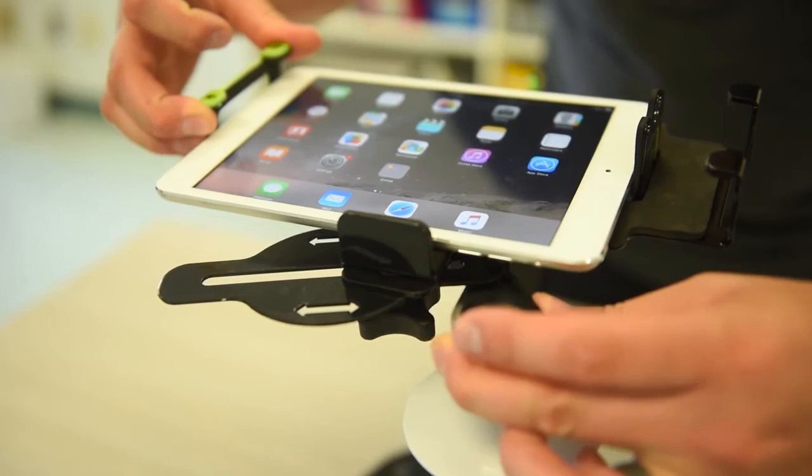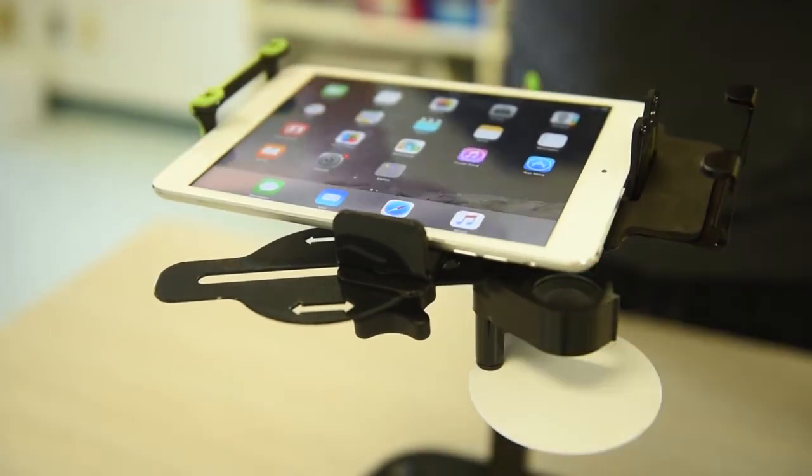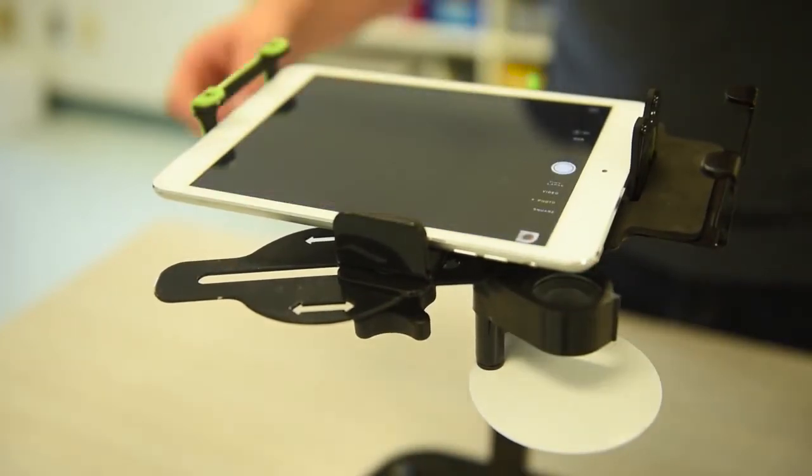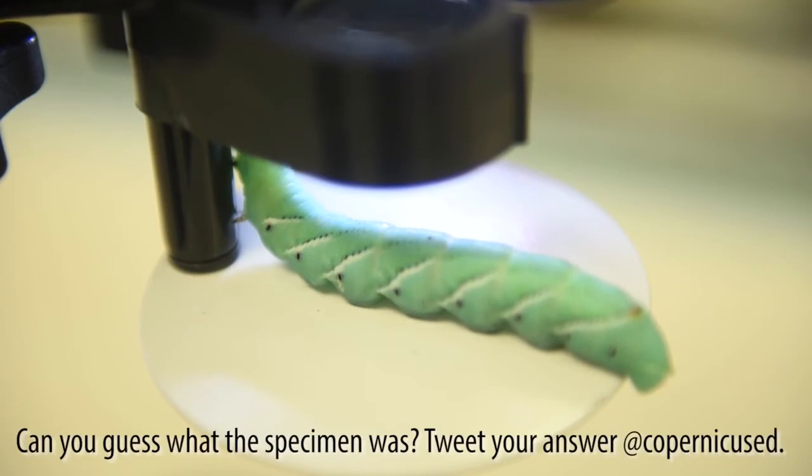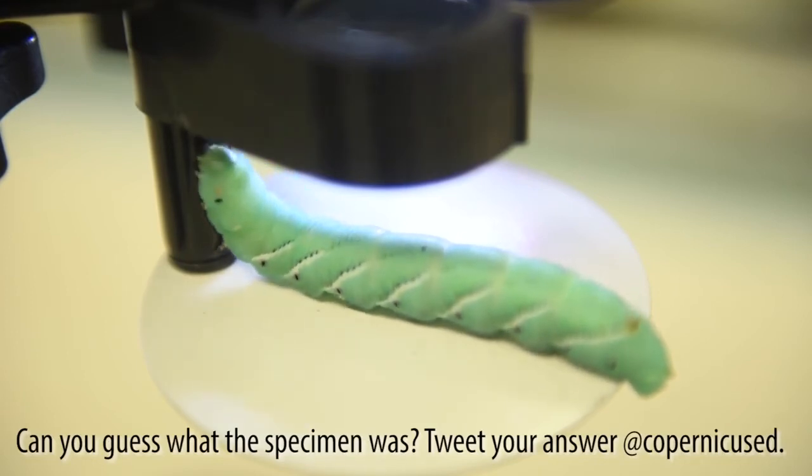Position the tray under the camera lens, turn on your device, open the camera app, and attach the LED light here. I will warn you, the specimen I've been forced to use by the people behind the camera is pretty gross, so if you're squeamish like me, feel free to look away.